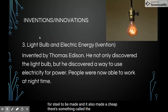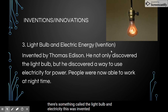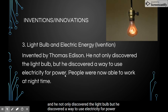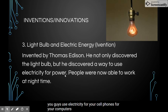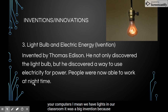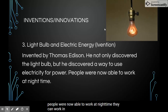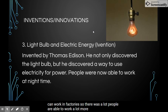There's something called the light bulb and electricity, invented by Thomas Edison. He not only discovered the light bulb, but he discovered a way to use electricity for power. We use electricity for cell phones, computers, and lights. It was a big invention because people were now able to work at nighttime and in factories, so they were able to work a lot more and produce a lot more.